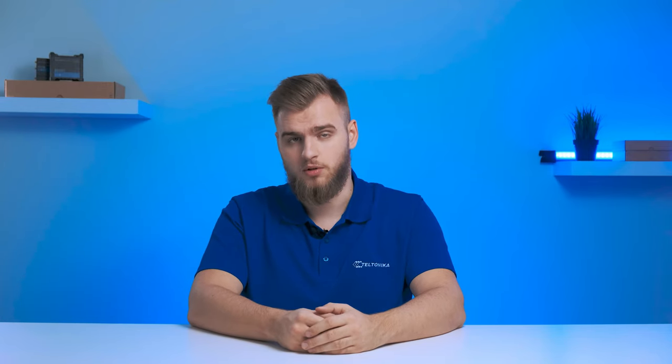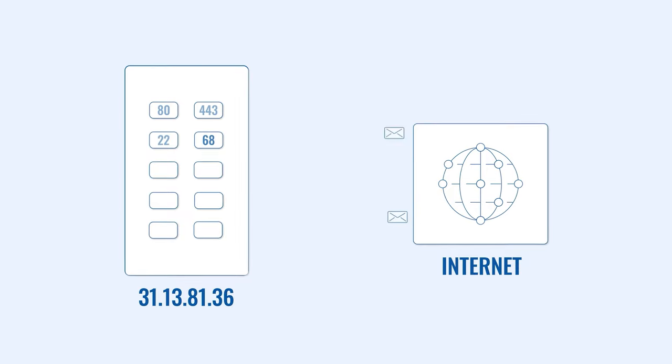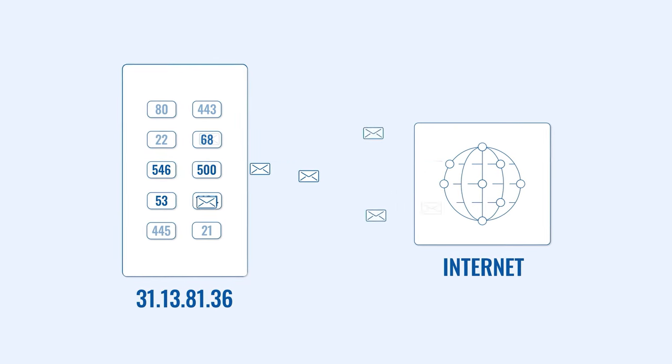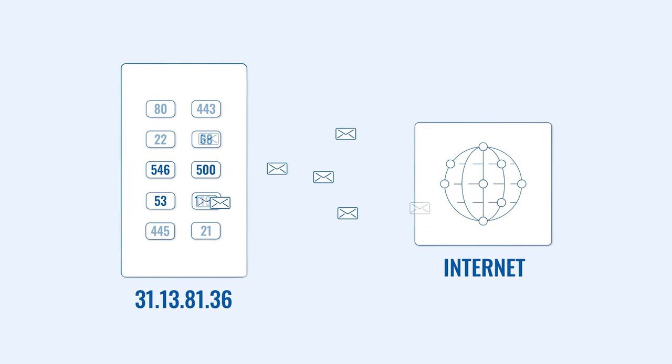Think of a network device as an apartment building. The building has its own unique address that lets you know where it's located. That's what the router's IP address is for as well — it helps to identify where the router can be found on the internet or a local area network. Each apartment in the building has a number dedicated only to it, and the same goes for network ports.